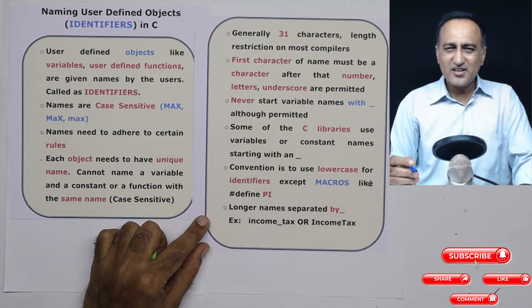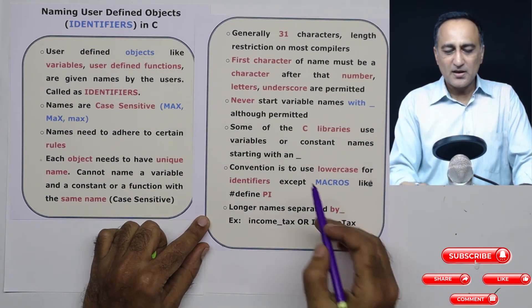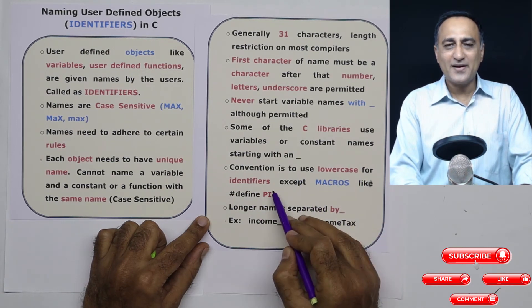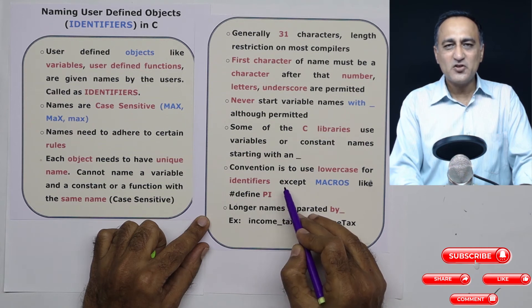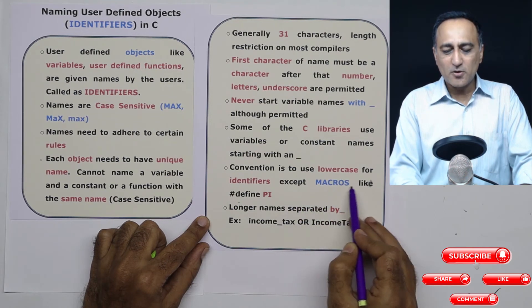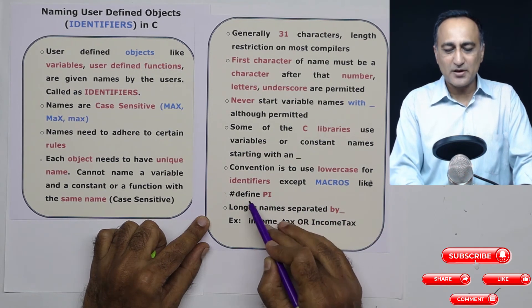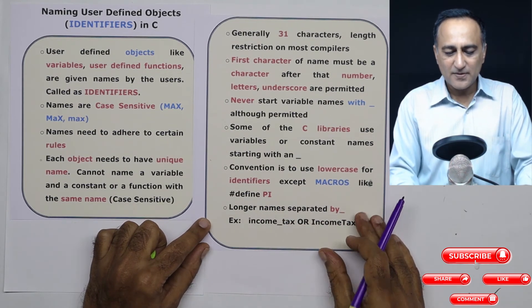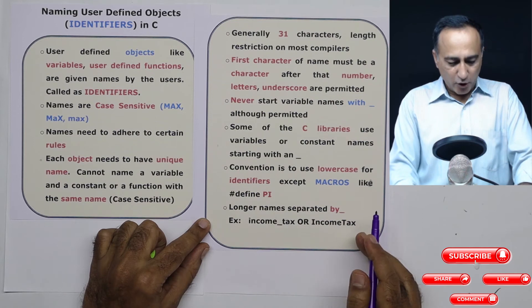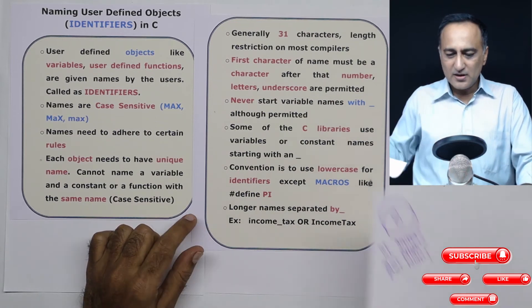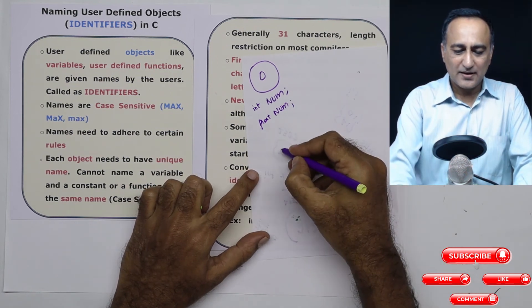Now there are certain conventions, these are not rules. Preferably use lowercase for all identifiers like integer i, j. This will be lowercase, name of functions will be lowercase. But if you're defining symbolic constant or macros, use uppercase. For example, has defined by pi is chosen as uppercase.